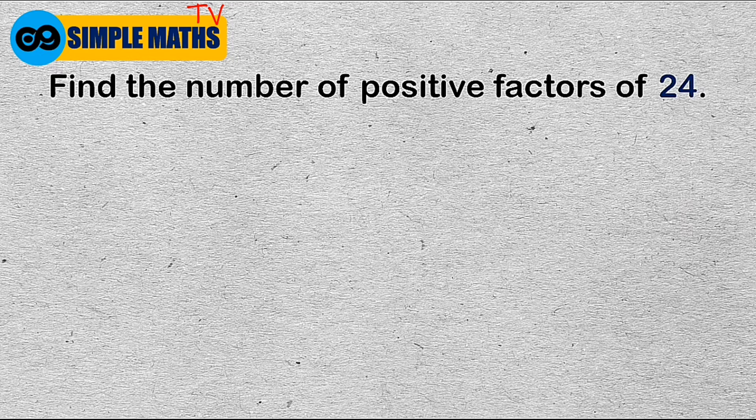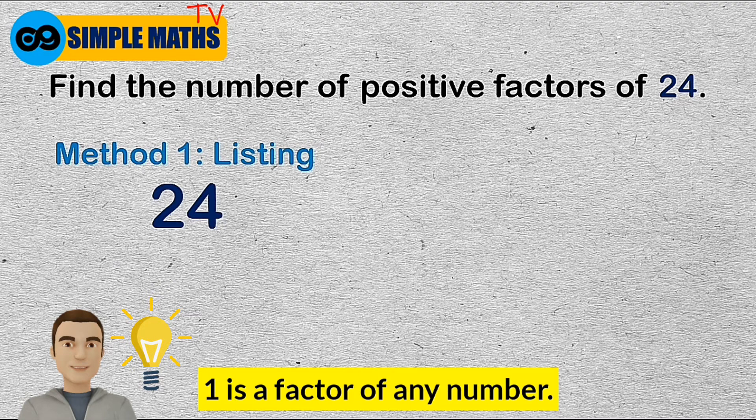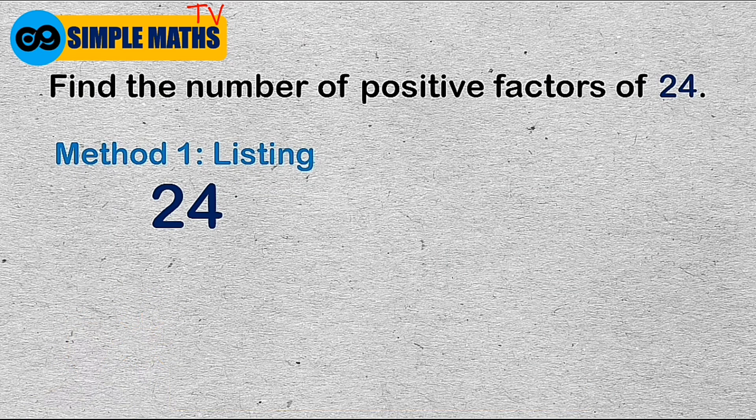One way to do this is to list all the factors of 24. The number 1 is a factor of any number. At the same time, any number is a factor of itself. So, first, we write 1 and 24.